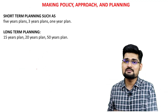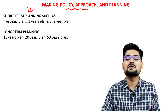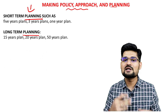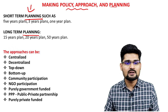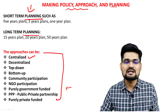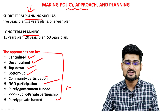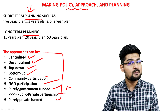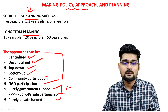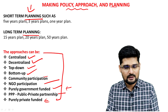Step four is making policy, approach, and planning in accordance with identified problems. There are two types of planning: short-term and long-term, depending on objectives. Approaches can be centralized or decentralized, top-down or bottom-up, with community participation, NGO involvement, purely government-funded, or PPP — Public-Private Partnership — which is very common in today's India, as well as purely private-funded approaches.